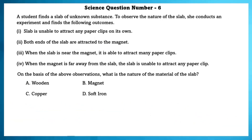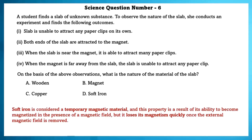Science question 6. A student finds a slab of an unknown substance and conducts an experiment, finding the following outcomes. According to the observations, we can say that soft iron is the material. Soft iron is considered a temporary magnetic material — it can become magnetized in the presence of a magnetic field, but loses its magnetism quickly once the external magnetic field is removed. So the answer is soft iron.